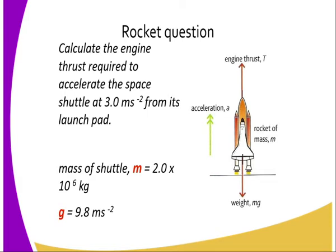The reaction in this case is what propels or accelerates the space shuttle through space. So we have the engine thrust, which is T. The rocket has a mass M, and the acceleration will be towards the direction of the engine thrust. The mass of the shuttle is 2.0 × 10⁶ kg, to convert it into the required SI unit.